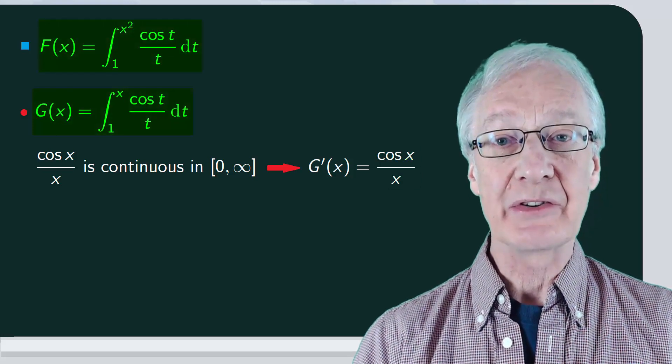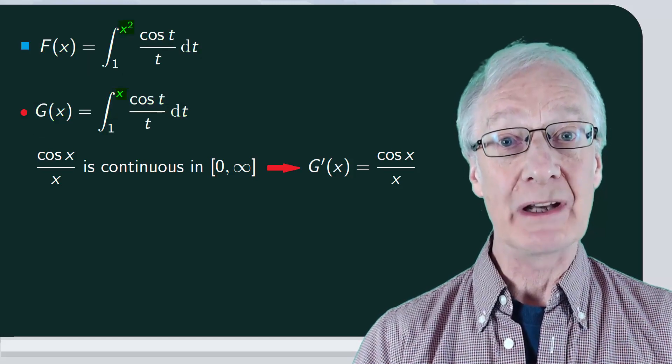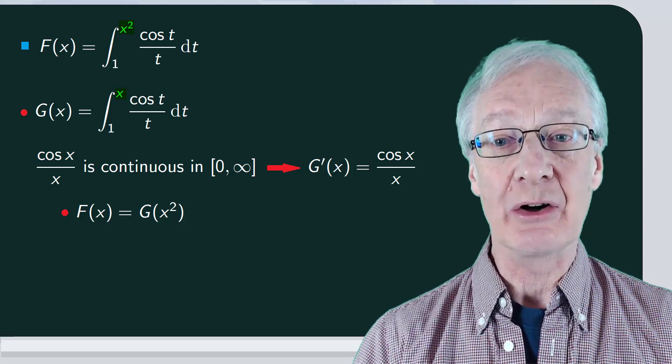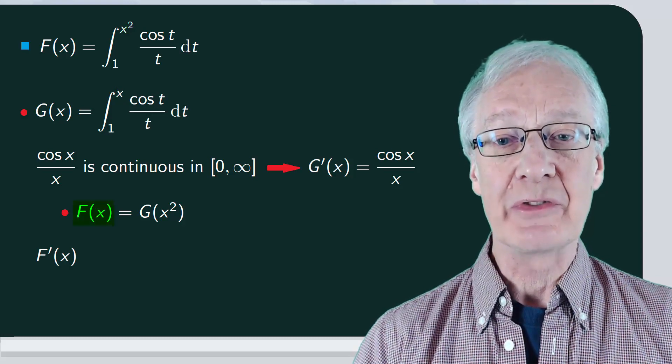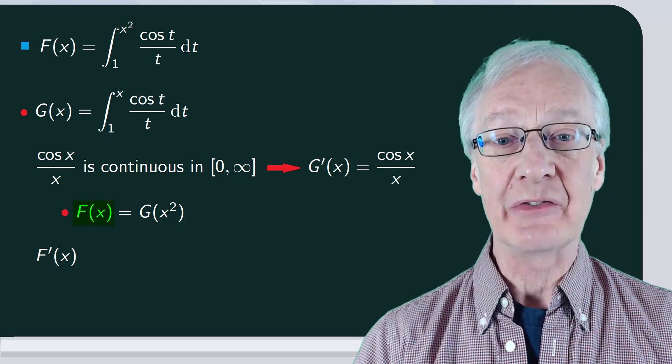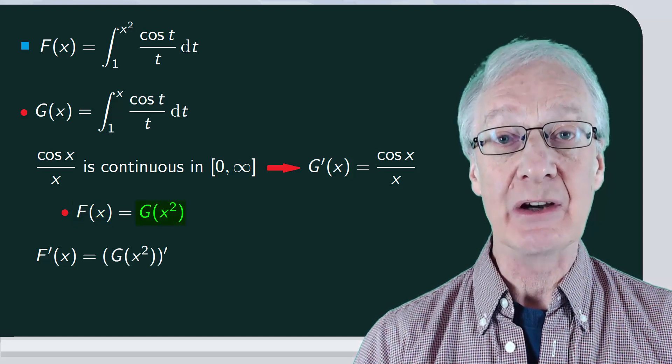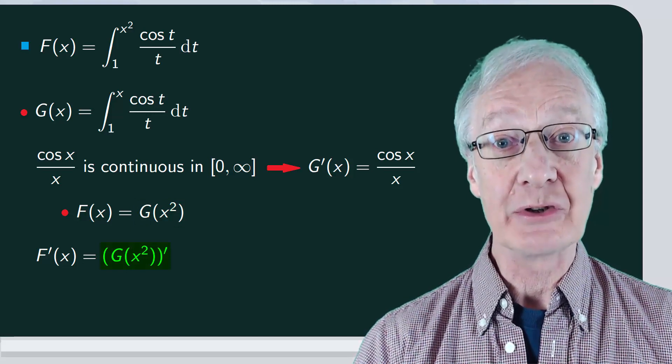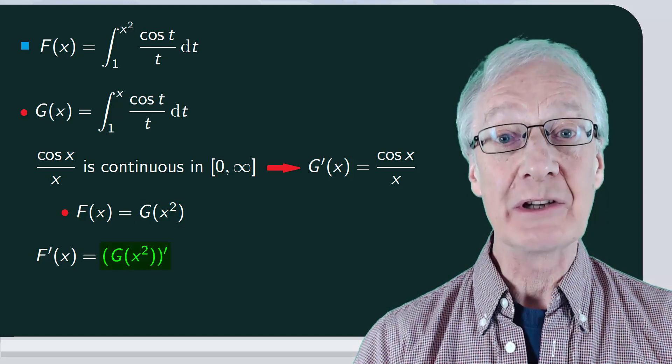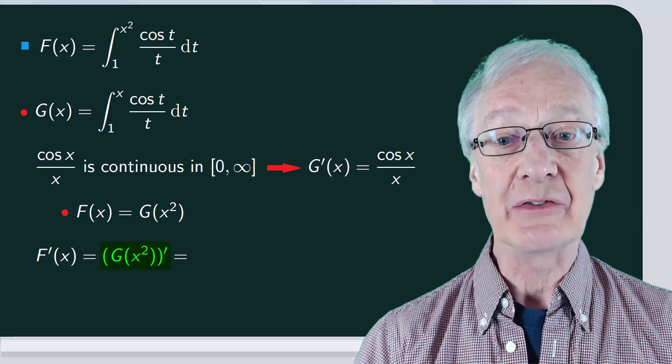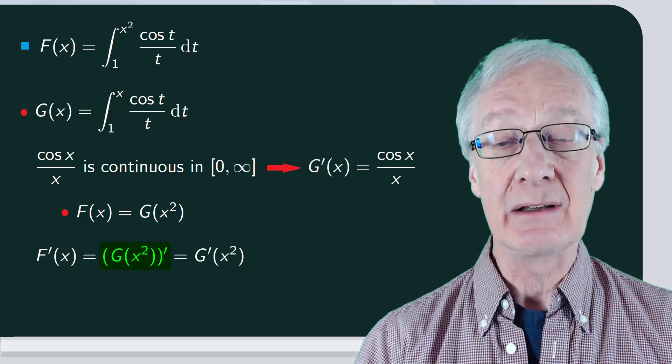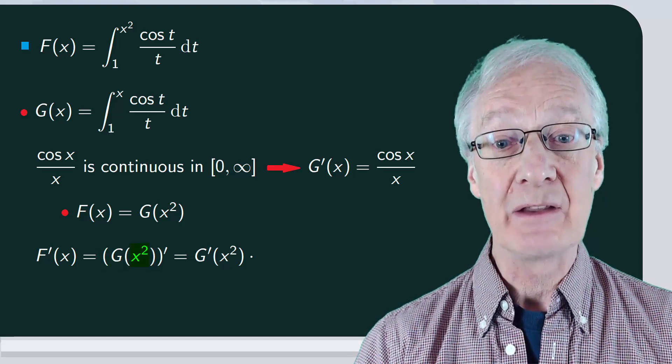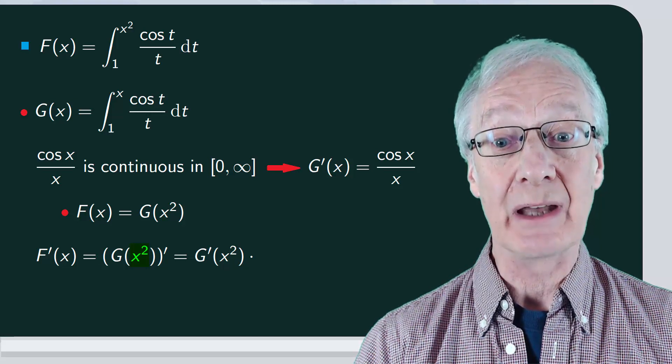Notice that f of x is the same as g of x, but with x squared in place of x. So f of x equals g of x squared. So the derivative of f of x is equal to the derivative of g of x squared. We have the derivative of a composite function. Therefore, we can apply the chain rule. The derivative is the derivative of g of x squared times the derivative of what's inside, the derivative of x squared, which is 2x.